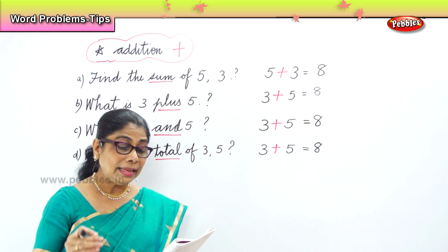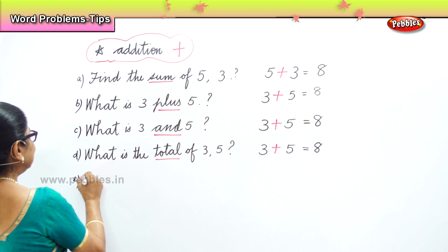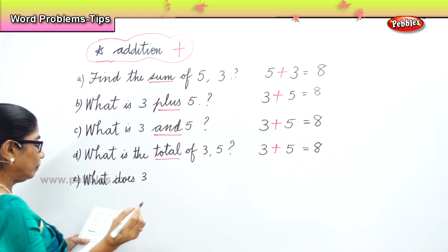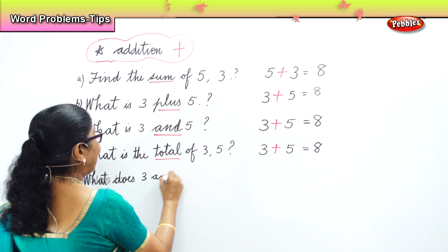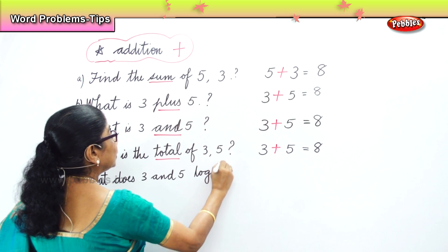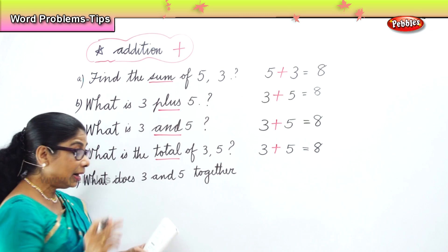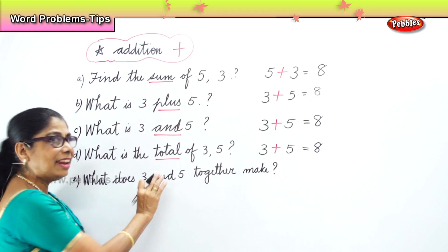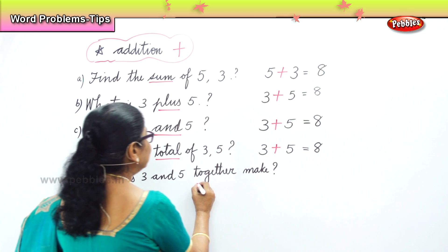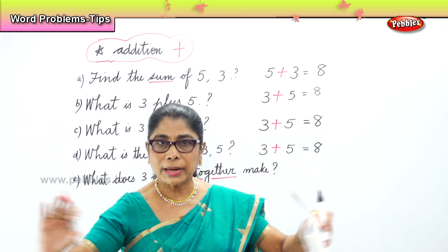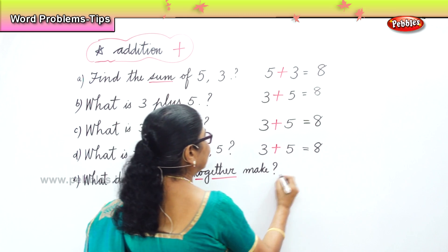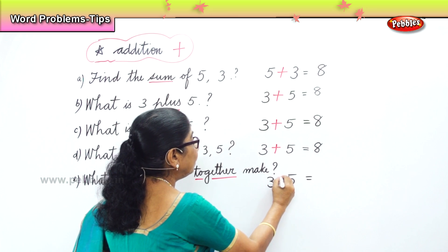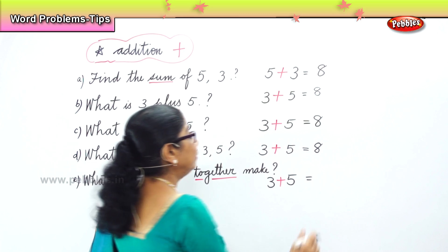What does three and five together make? That's another small problem. Three and five — again, together. When you say together, the word together means put this one and that one together — add. So, three plus five. Together means plus. Three plus five make eight.